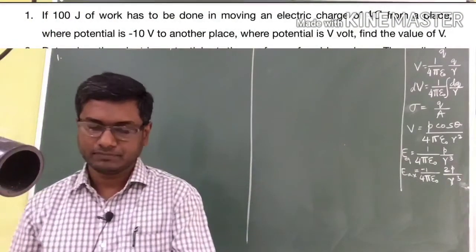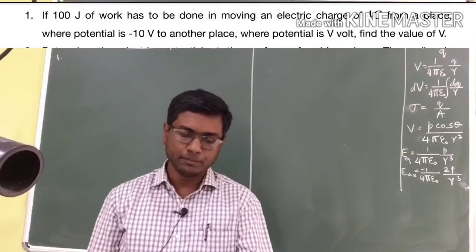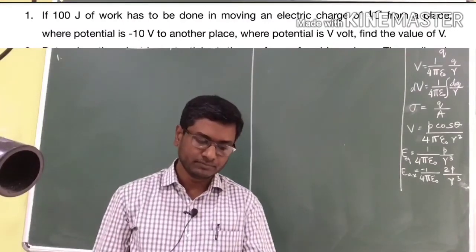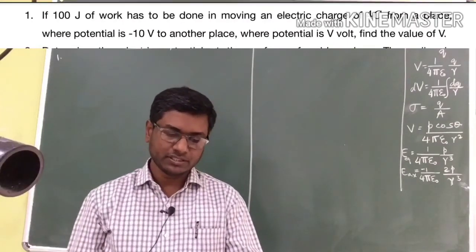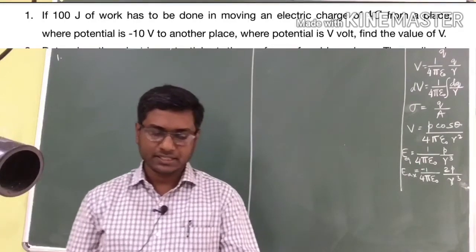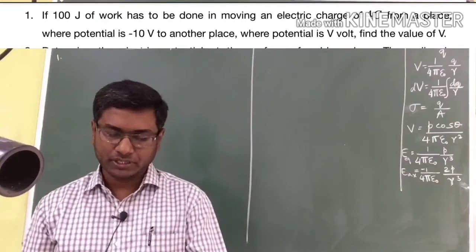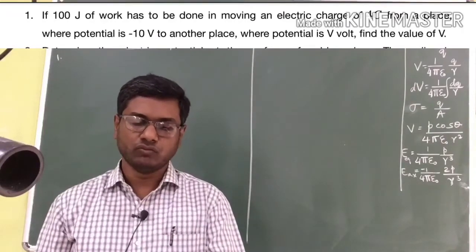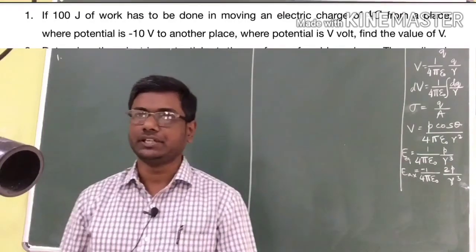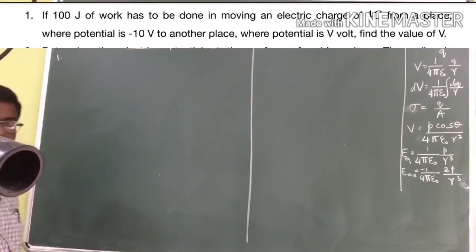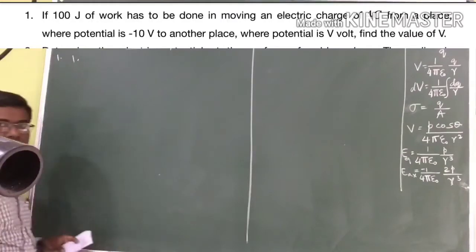If 100 joule of work has to be done in moving an electric charge of 4 coulomb from a place where the potential is minus 10 volt to a place where the potential is V volt, find the value of V. So, there are two potentials. We need to find the value of one of the potential. Let's begin with question number one.